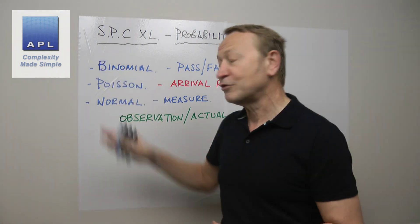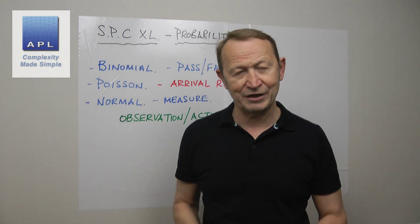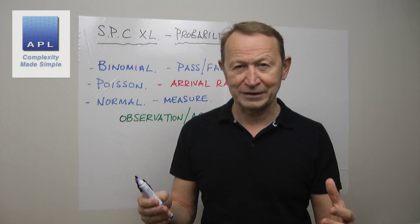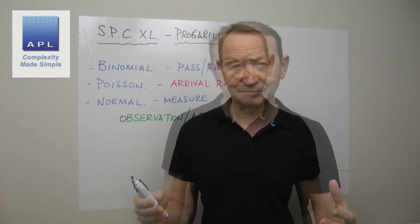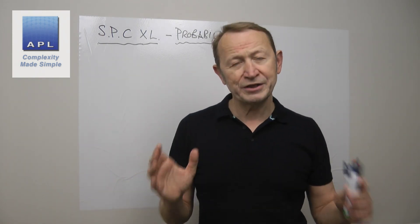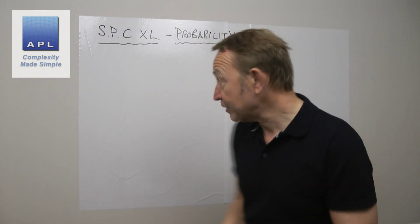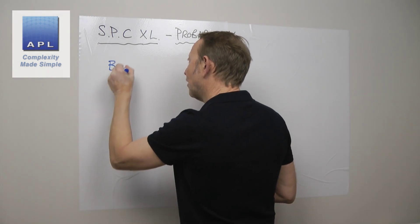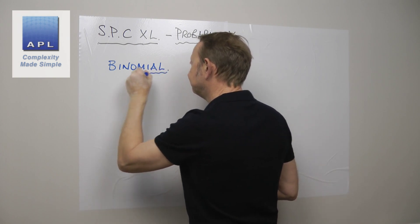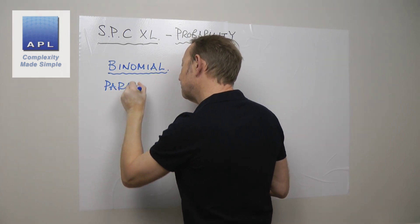Let's get into the probability work, work our way through these three distributions, and take a look at how SPCXL works out the results. We'll start with the binomial distribution — how does SPCXL work with the binomial? With all probability distributions you're going to need parameters.